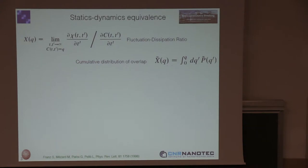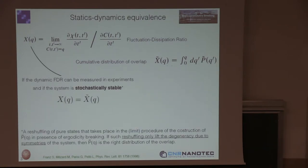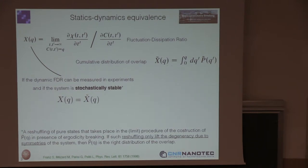They said there is a one-to-one correspondence between the fluctuation-dissipation ratio — which every one of you knows — and the cumulative distribution of the overlap, under the assumption that in some systems you can actually measure the full fluctuation-dissipation ratio at different asymptotic values of the correlator, and in systems well represented by models where the procedure producing this equivalence is stable.